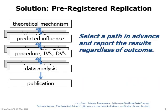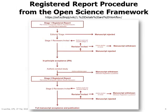The key solution to the problem is pre-registered replications. We select a path in advance and report the results regardless of the outcome. The open science framework now has a thoughtful procedure for conducting pre-registered research, including thorough review of the proposed methods before data are collected.